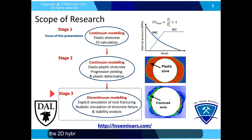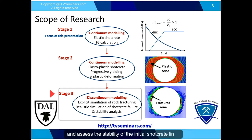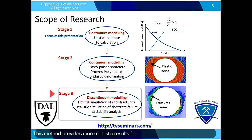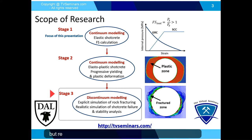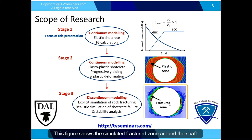In the last stage, the 2D hybrid finite-discrete element method will be used to explicitly simulate fracturing throughout the rock mass and shotcrete and assess the stability of the initial shotcrete liner. This method provides more realistic results for the stability assessment of shotcrete but requires extensive calibration for both rock mass and shotcrete. This figure shows the simulated fractured zone around the shaft.